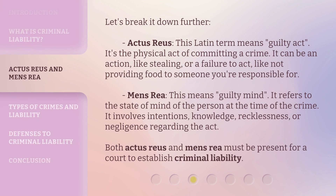Let's break it down further. Actus reus — this Latin term means 'guilty act.' It's the physical act of committing a crime. It can be an action, like stealing, or a failure to act, like not providing food to someone you're responsible for. Mens rea means 'guilty mind.' It refers to the state of mind of the person at the time of the crime. It involves intentions, knowledge, recklessness, or negligence regarding the act. Both actus reus and mens rea must be present for a court to establish criminal liability.